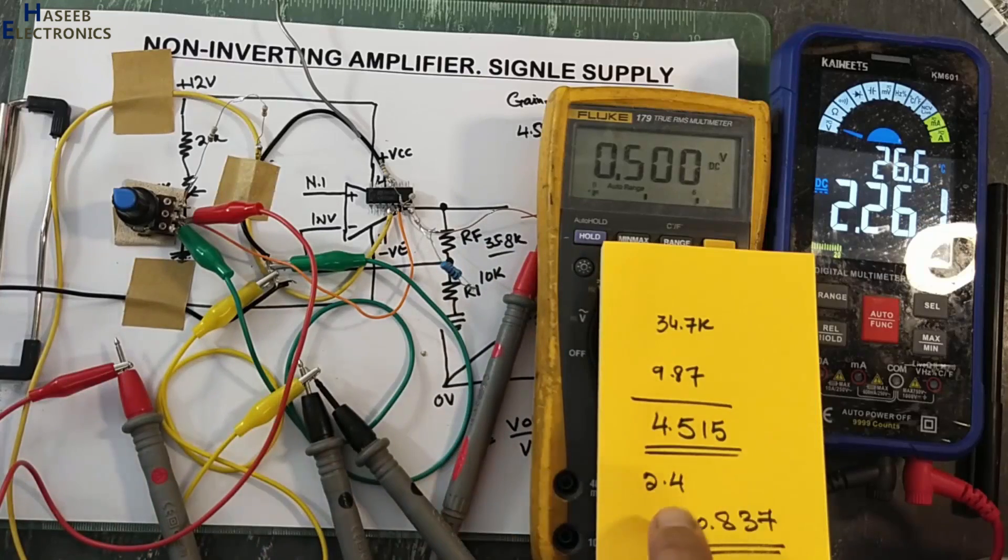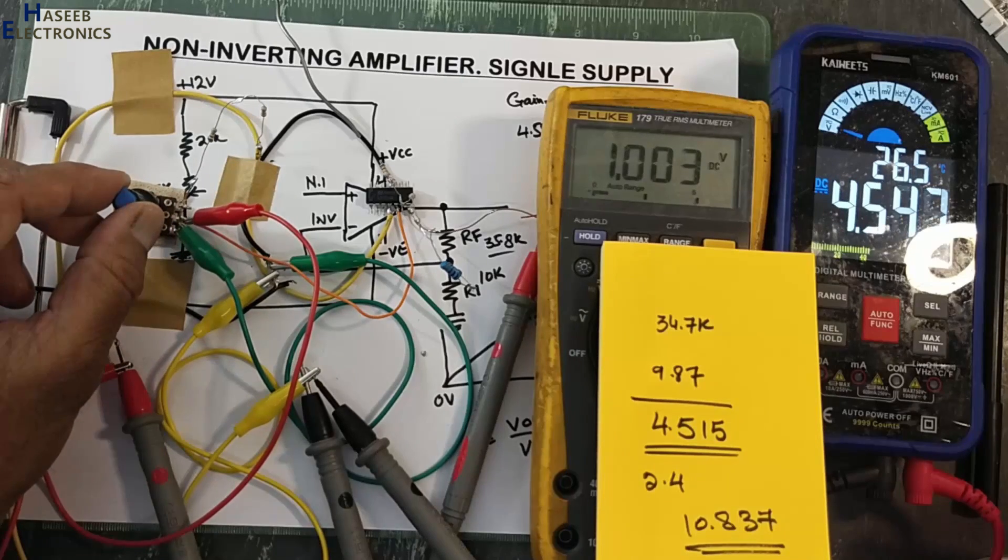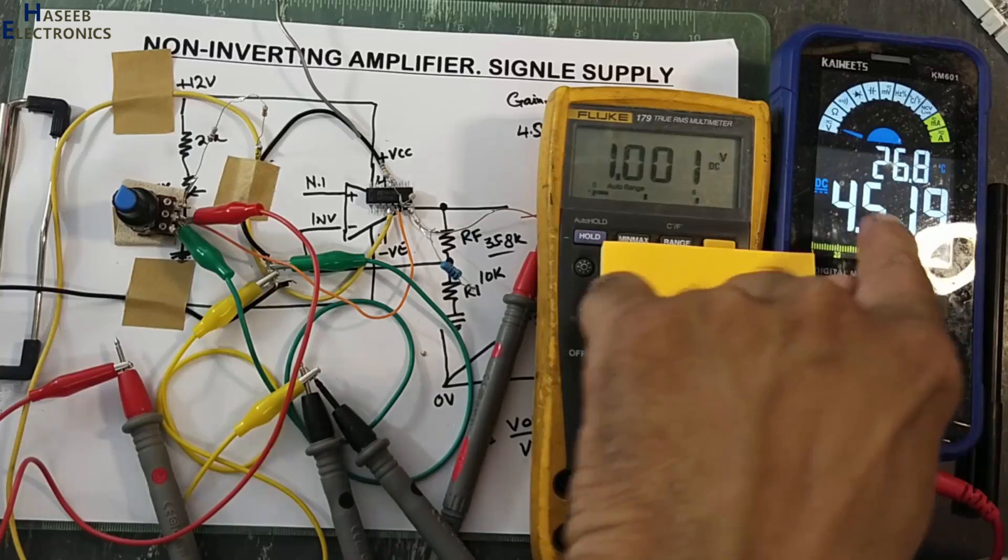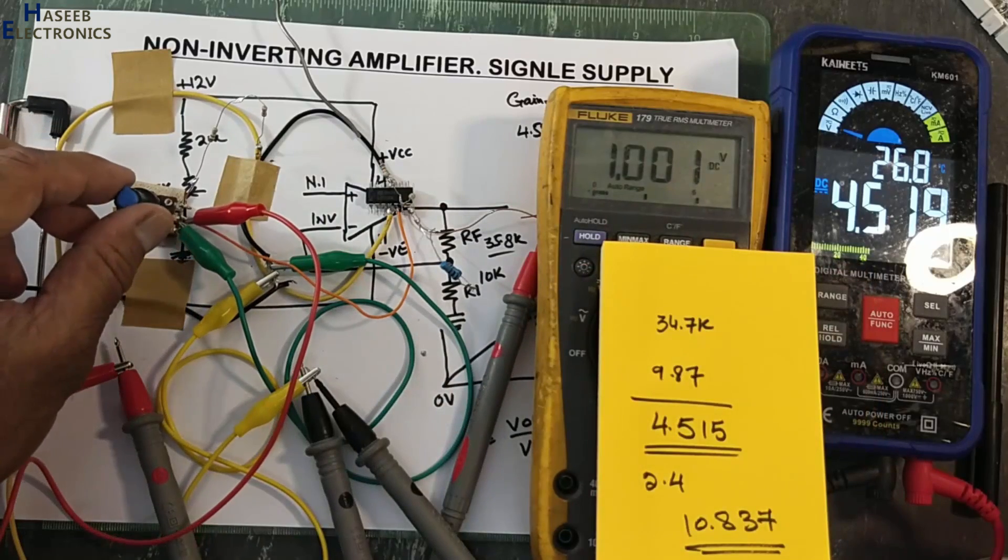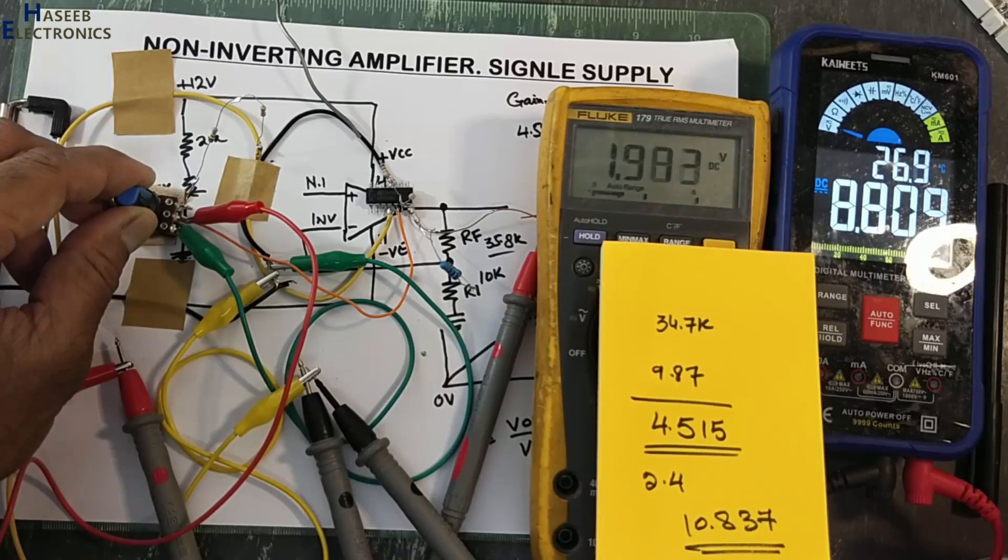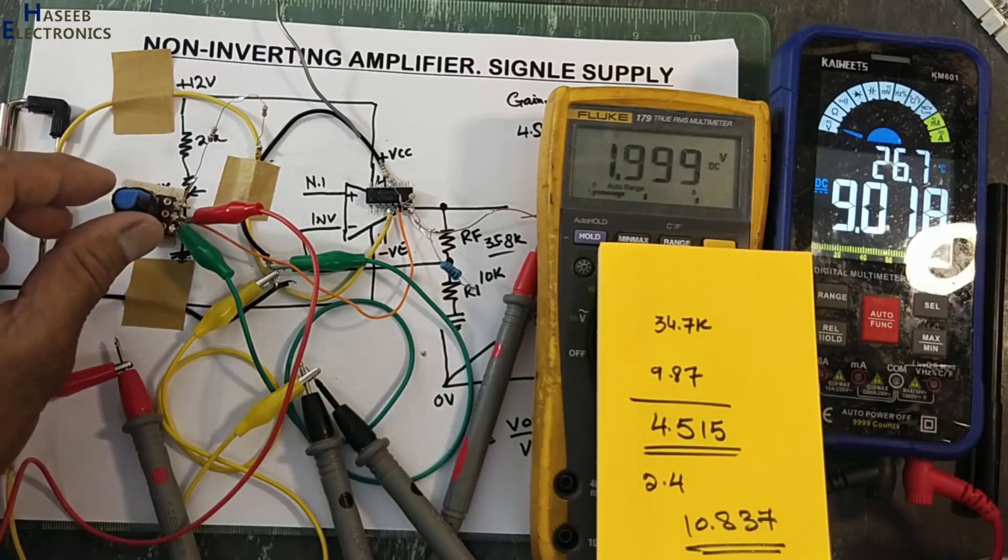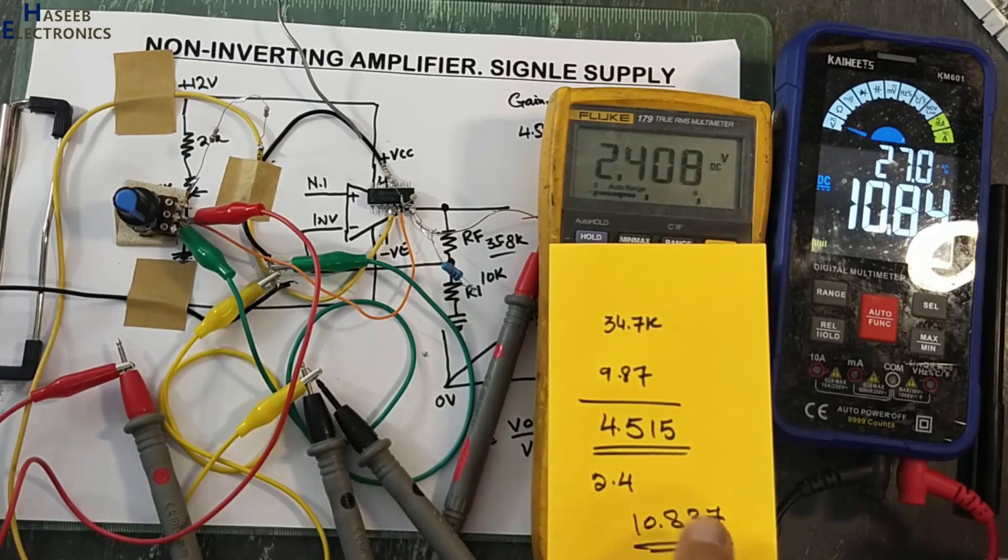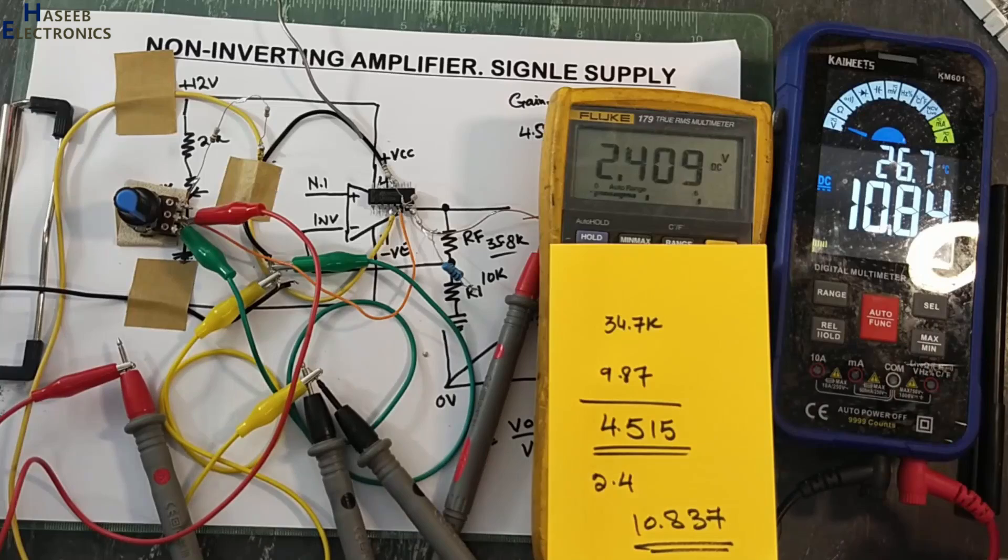Let's inject one volt. I applied 1.000 volt. The same gain which we calculated, the same gain is here, 4.51. Our calculated value was 10.837. The physical value 2.409, output 10.84. So in this way we can plot any input signal at the output.